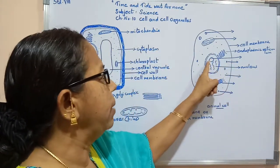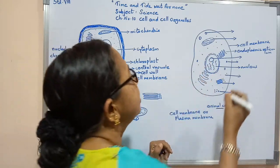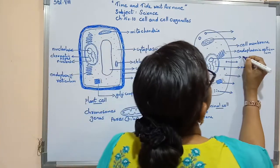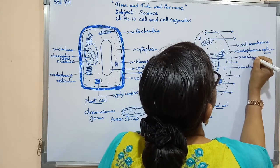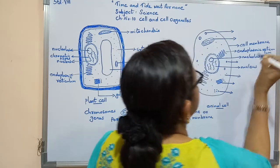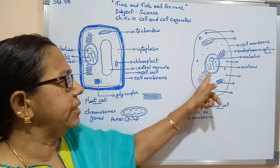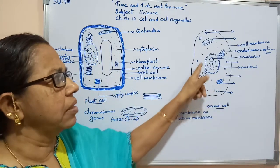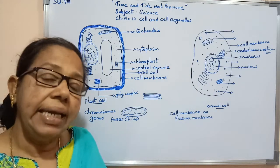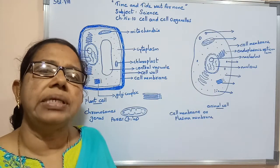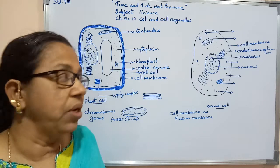Inside the nucleus, another membrane-bounded bag-like structure can be seen. This is known as the nucleolus, which is the main part of the nucleus. So the nucleus is the main organelle of the cell, and inside the nucleus the main part is called the nucleolus.